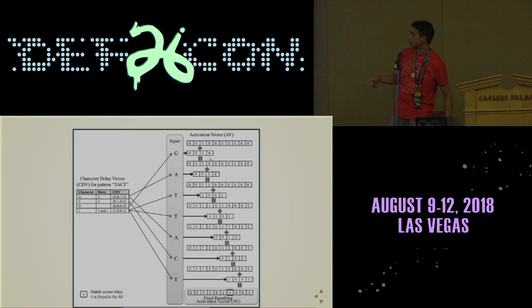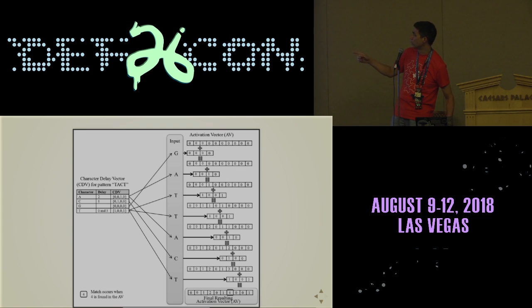G had an all-zero vector so nothing happens. The A has a zero, zero, one, zero vector, so we get a one over in the appropriate position. Then we continue with each T and the rest of the sequence: A, C, T.